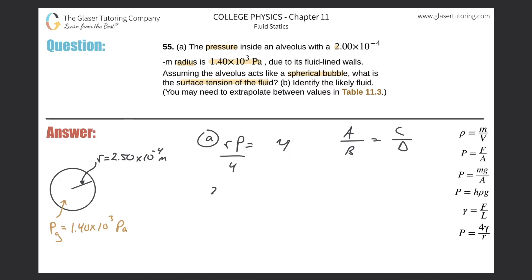So this is going to be the radius, 2.50 times 10 to the minus 4 multiplied by the pressure. They told us that the pressure inside, which is basically the gauge pressure inside of that alveolus, is 1.40 times 10 to the third pascal. Those units are good. And then I'll divide that by 4. That's going to be equal to our gamma value.